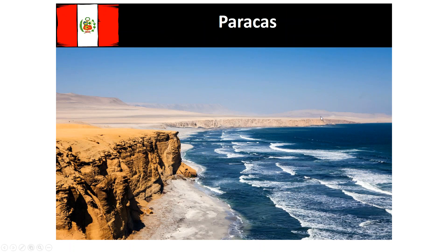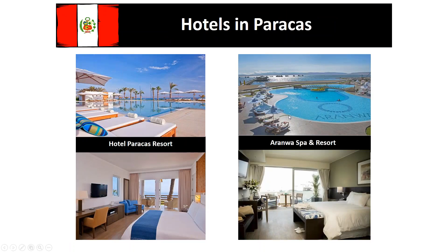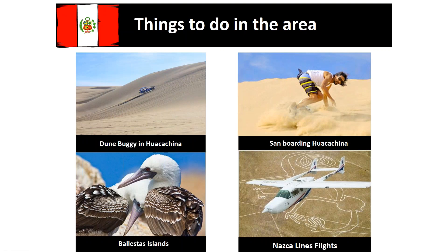This is the National Reserve — as mentioned, it's desert. You've got the National Reserve just outside Paracas, and some of the beautiful hotels located there: the Paracas Resort, the Arunwa Spa and Resort, looking out onto the bay. You can see some of the fishing boats and also the pier for the boat trips out to the Ballestas Islands. On the Ballestas Islands you've got a variety of sea seals, sea lions and seabirds — that makes for a beautiful two to two-and-a-half to three-hour trip.